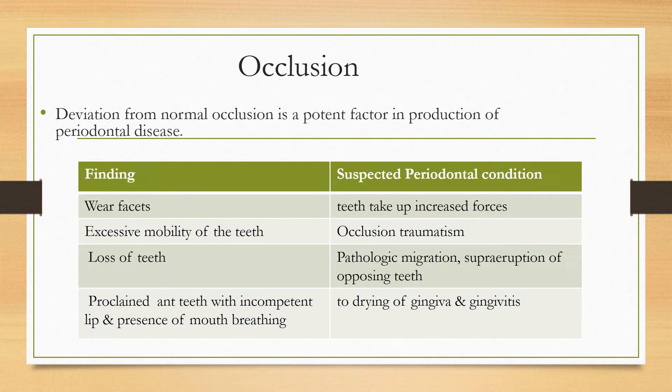Loss of teeth might lead to pathological migration or supraeruption of the opposing tooth. Proclined teeth with incompetent lips and presence of mouth breathing might lead to drying of the gingiva, which might lead to gingivitis.